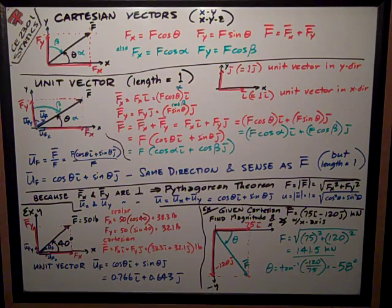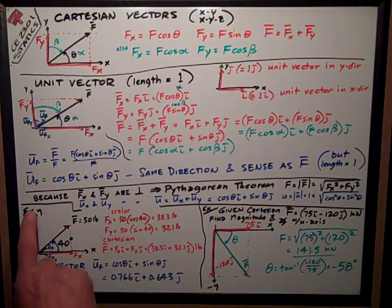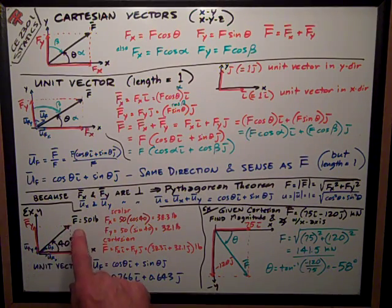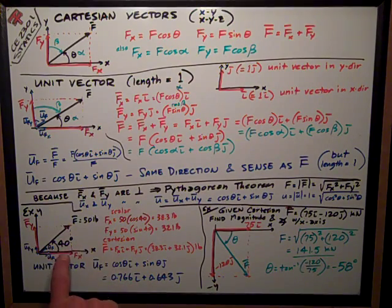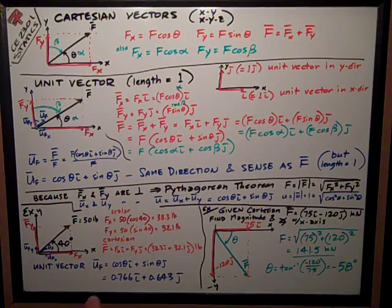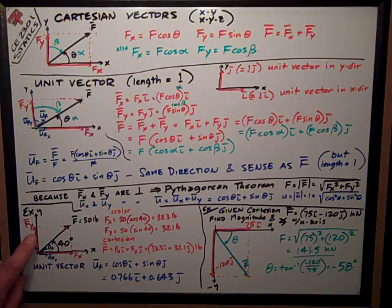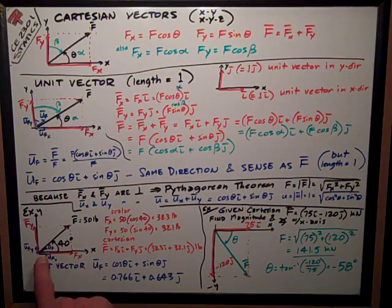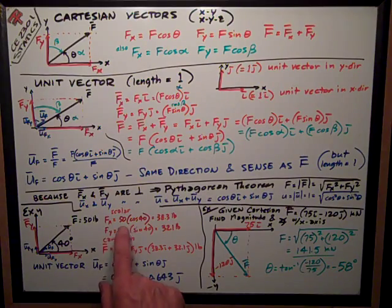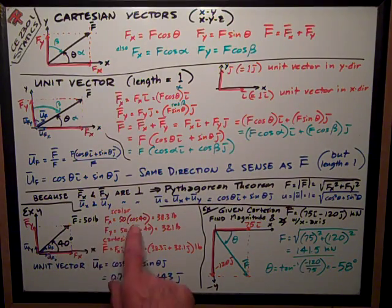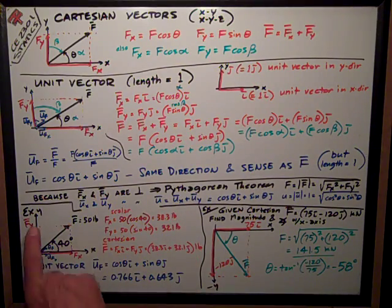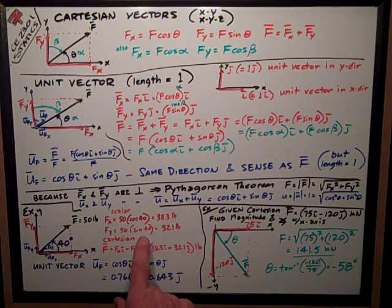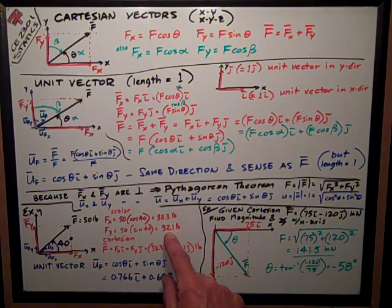It really helps if we apply this to an example. I have an example where I'm given the vector as 50 pounds, f, and it's at an angle 40 degrees counterclockwise, so consider it positive from the x-axis. So I can write the components fy and fx. fx is equal to the magnitude, 50 times the cosine of that angle, 40 degrees, is 38.3 pounds. fy is 50 times the sine of the 40-degree angle, 32.1 pounds.